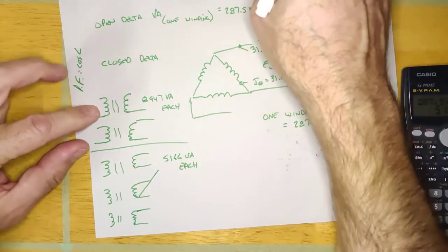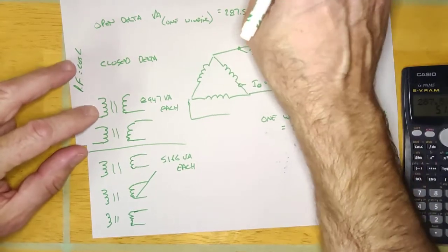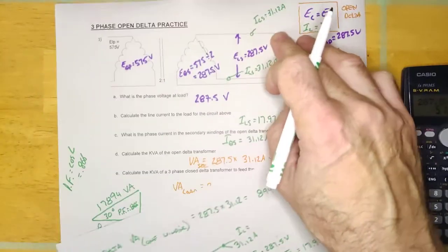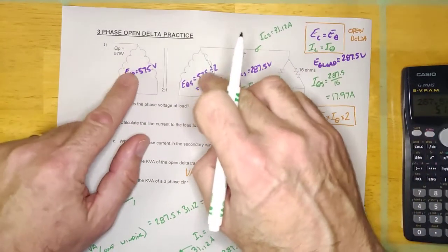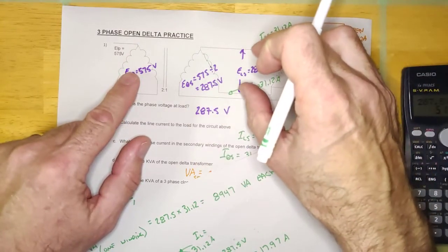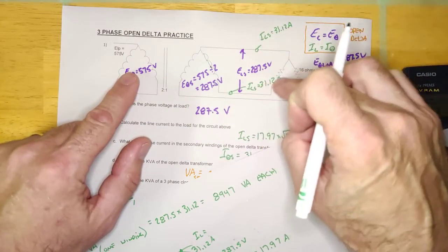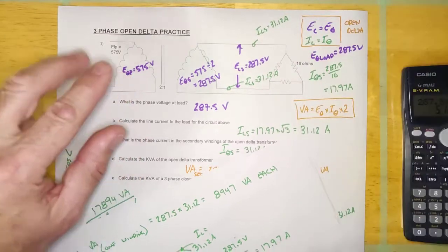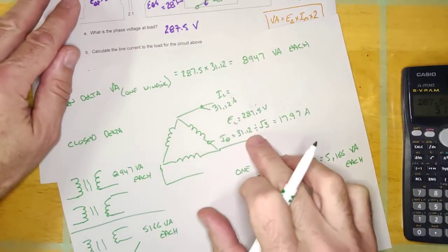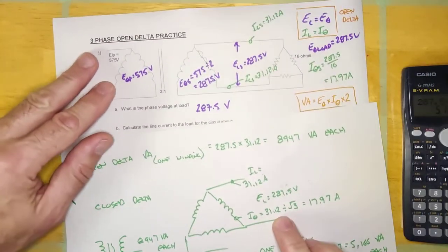And so the reason why open delta exists guys, basically, is what's cheaper? Two 9 kVA transformers or three 5 kVA transformers, essentially? Okay, because the guy who's doing this installation, you know, the load doesn't care. It doesn't. This load here, it doesn't care if it's connected to open delta or closed delta. All it knows is it's getting 287.5 volts and it's drawing 31.12 amps. It's going to do that whether it's open delta or closed delta.